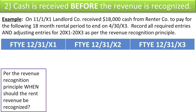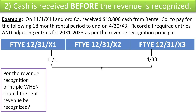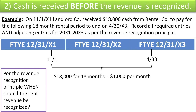Per the Revenue Recognition Principle, when should the rent revenue be recognized? In situations like this, the best thing to do is draw a diagram to visually see when the landlord is earning the revenue. Starting with the key dates: November 1st is when the landlord received an $18,000 payment covering a period extending to April 30th, X3, 18 months later. That's $18,000 paid for 18 months' worth of rent, so the monthly rental rate is $18,000 divided by 18 months, or $1,000 per month.